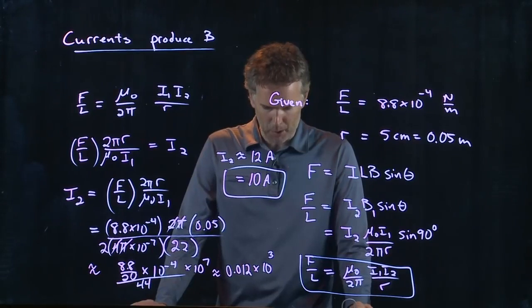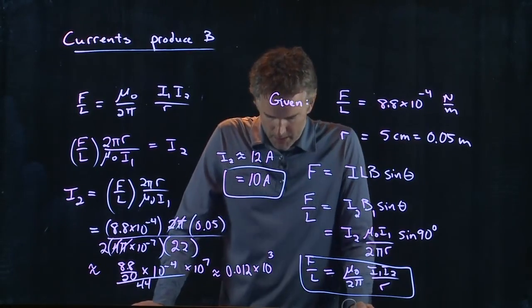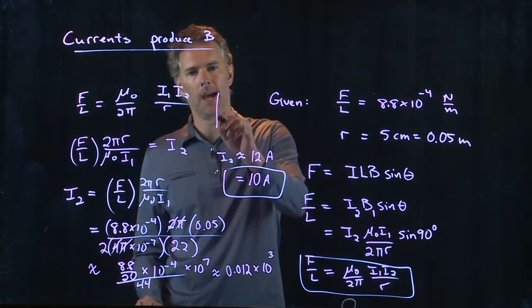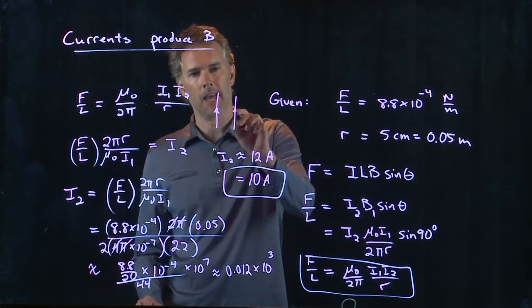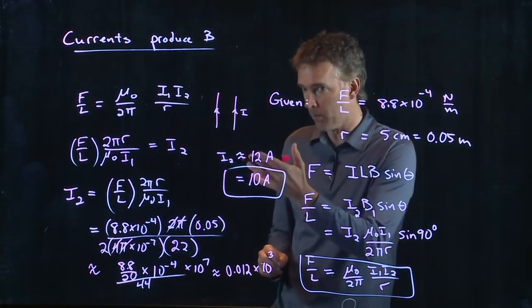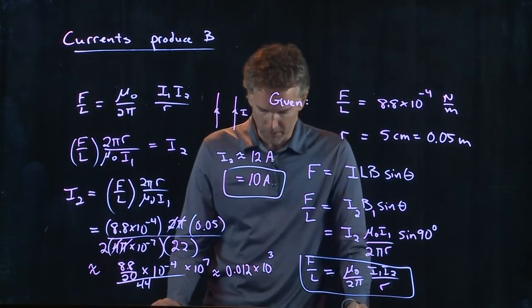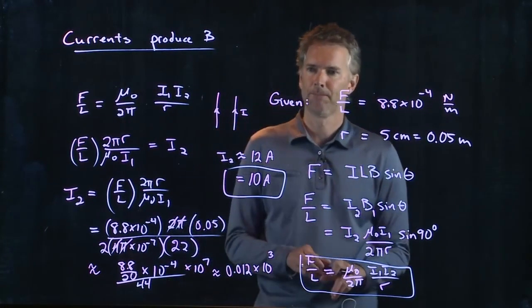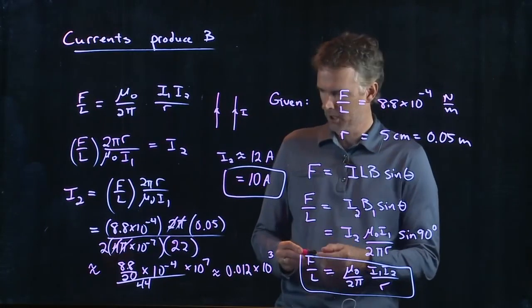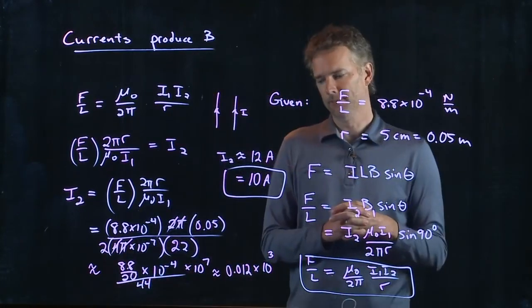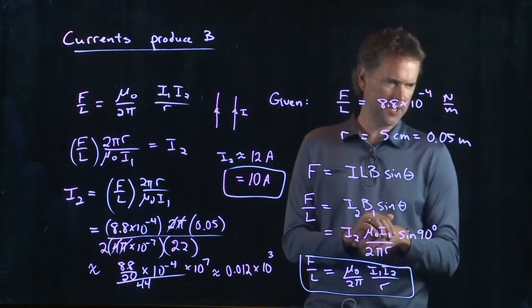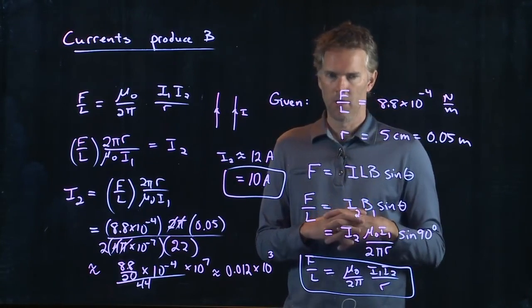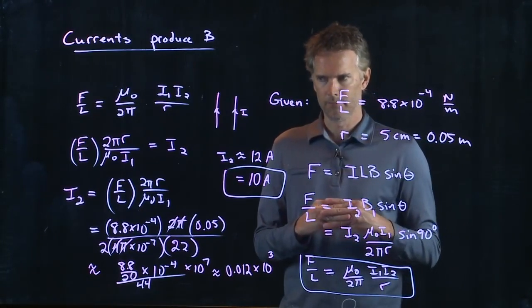The part b of this is what is the direction of the current in the second wire? If you remember our picture, we had current in the first wire and the current in the second wire was up and it was an attractive force. So we're going to say upward for the second part, part b, submit, also correct. Good problem. Alright, why don't we wrap it for today, and I will see you guys tomorrow online. Cheers.